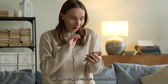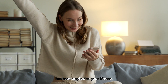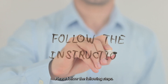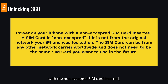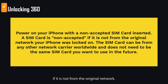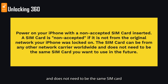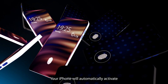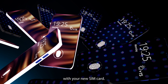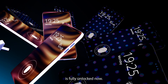As soon as you receive confirmation that the unlock has been applied to your iPhone, please follow these steps. Step 1: Power on your iPhone with a non-accepted SIM card inserted. A SIM card is non-accepted if it is not from the original network your iPhone was locked to. The SIM card can be from any other network carrier worldwide and does not need to be the same SIM card you want to use in the future. Step 2: Your iPhone will automatically activate with your new SIM card. That means your iPhone is fully unlocked now.